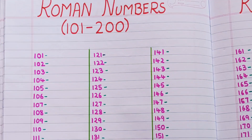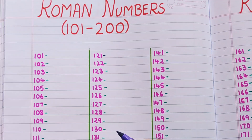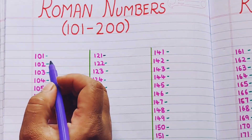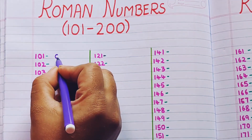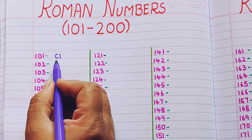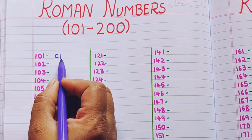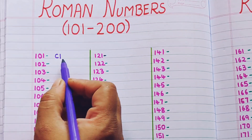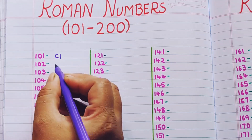Now we already know that 100 is represented by C. So 101 is CI because C represents 100 and I represents 1. 101 is CI.